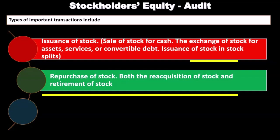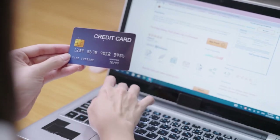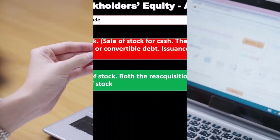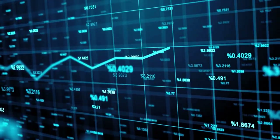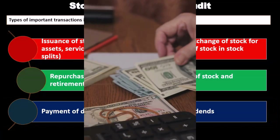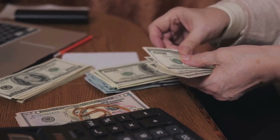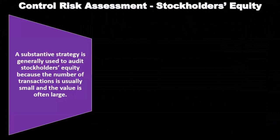The repurchase of stocks — both the reacquisition and retirement of stock — is another type of transaction to examine. If a publicly traded company repurchases its own stock to hold as treasury stock or to retire it, those are transactions we want to be aware of in the audit process. The payment of dividends — both cash and stock dividends — is also something to consider. Cash dividends are more straightforward to audit, while stock dividends are a bit more complex.